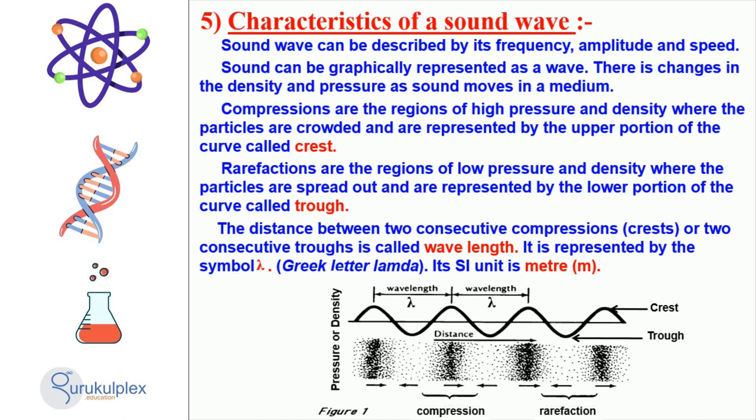Graphically, sound waves can be represented in the form of a wave, with changes in the density and pressure as it moves through a medium. The upper part of the wave is known as a crest, where the pressure and density is high, while the lower portion of the wave is known as a trough and has a lower pressure and density.